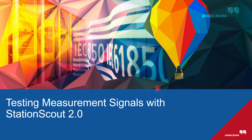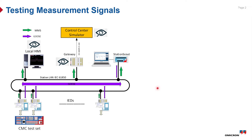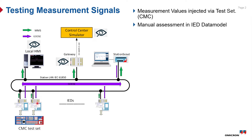First of all, let me explain the setup we are going to use. We have a CMC test set wired to an IED to inject analog measurement values. The measurement values received by the IED are represented in the data model of the IED. We will check if the values injected are matching with the ones in the data model.